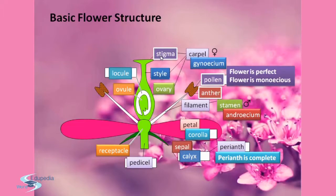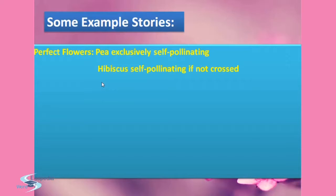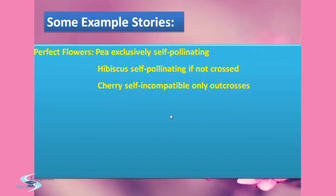The stigma is the part of the pistil where pollen germinates. The ovary is the enlarged basal portion of the pistil where ovules are produced. So this flower is perfect and monoecious — it bears both male as well as female reproductive units in one flower. Examples of perfect flowers: pea, which is exclusively self-pollinating; hibiscus, also self-pollinating if not crossed; and cherry, which is self-incompatible and only out-crosses.